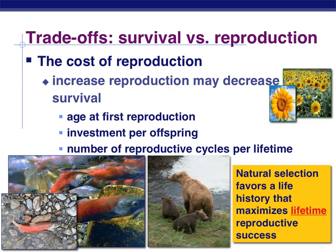We realize that natural selection favors a life history that maximizes lifetime reproductive success. If I can get you healthy and living long enough to the point where you can actually reproduce on your own, then as a parent I have done my job.